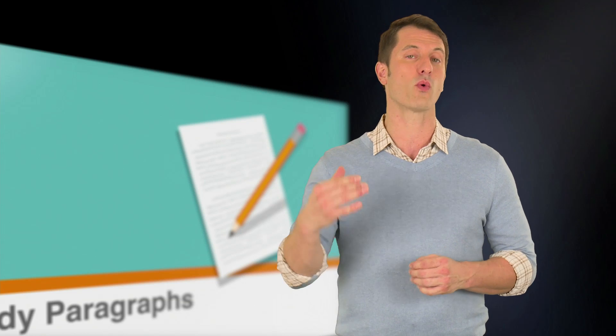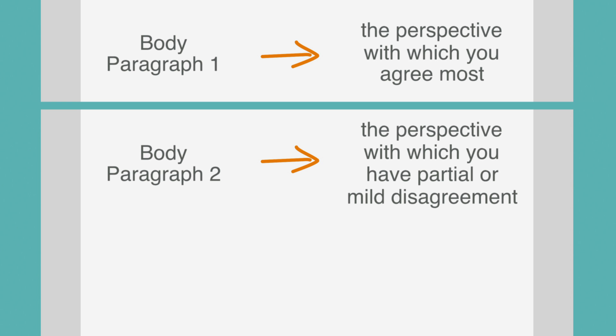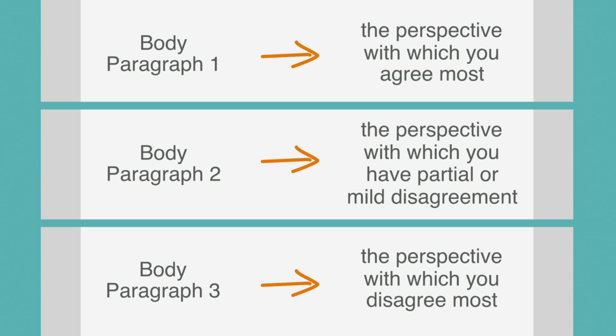Now that you've identified the best ways to create body paragraphs, let's talk about the way they should be organized within your essay. The best order for your body paragraphs is: body paragraph one, the perspective with which you agree most; then body paragraph two, the perspective with which you have partial or mild disagreement; and finally, body paragraph three, the perspective with which you disagree most.